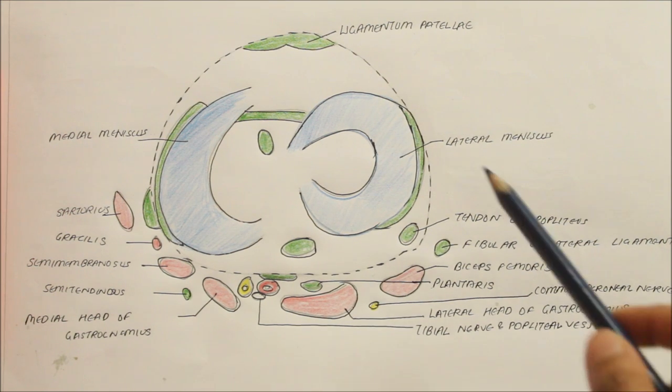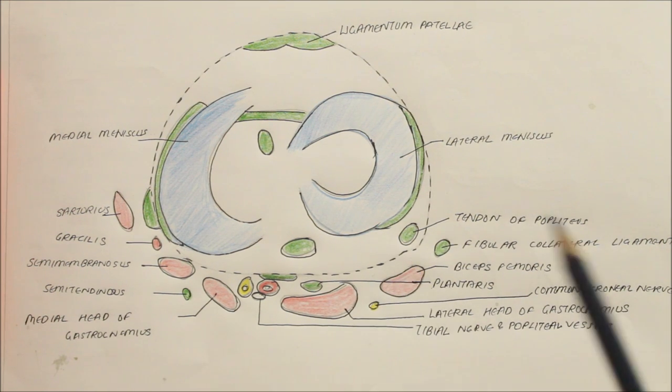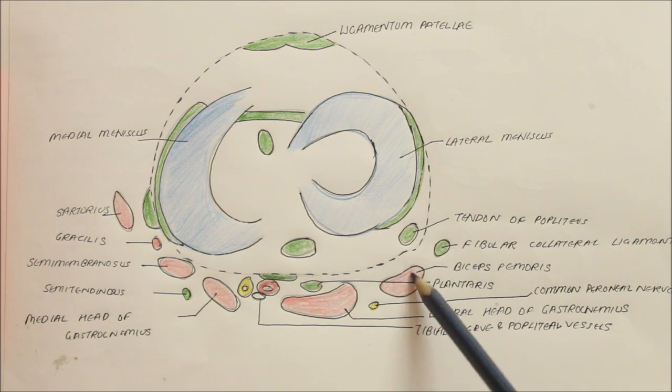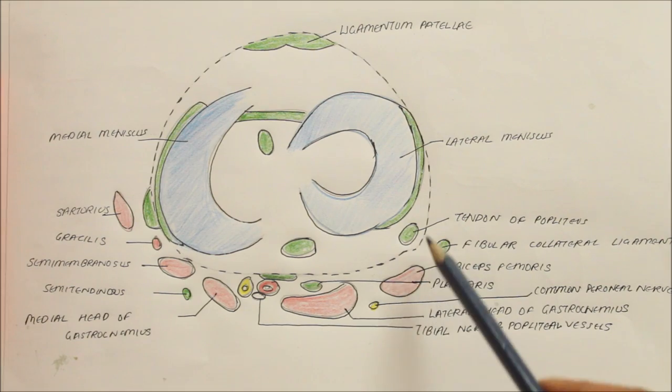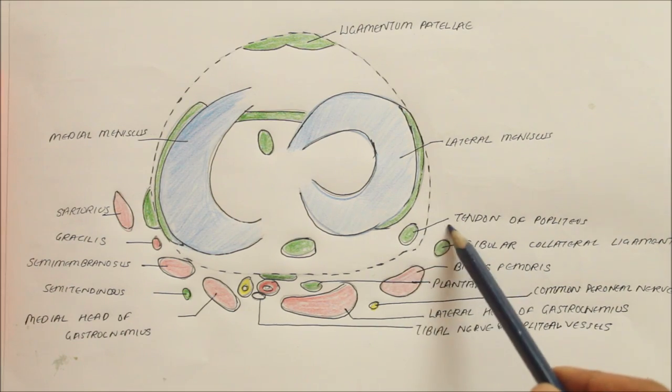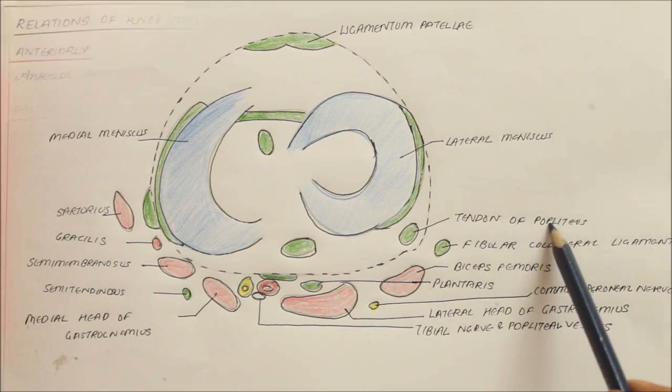Laterally, the knee joint is related to the biceps femoris muscle and the tendon of origin of the popliteus.